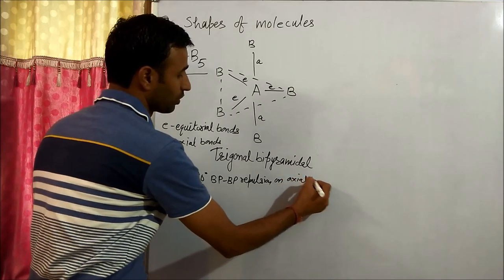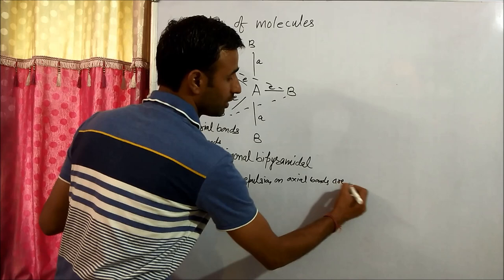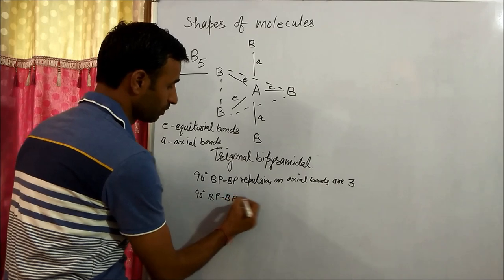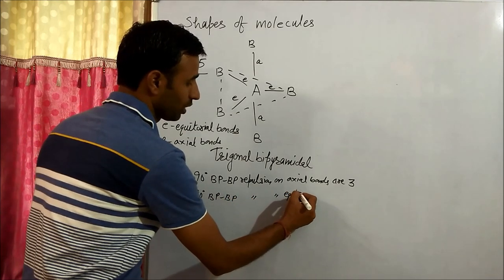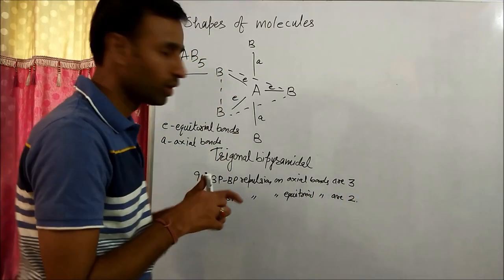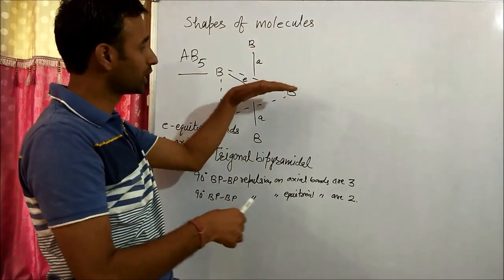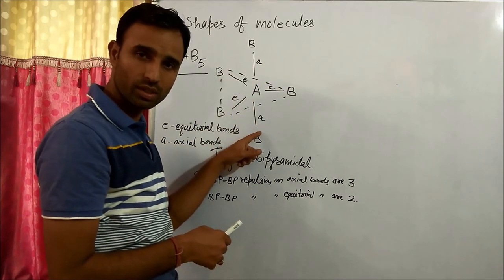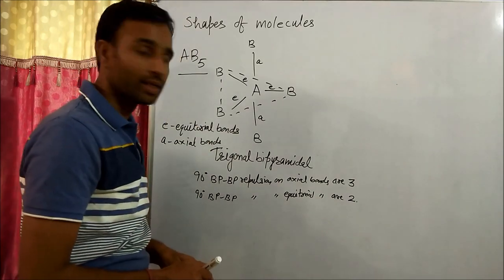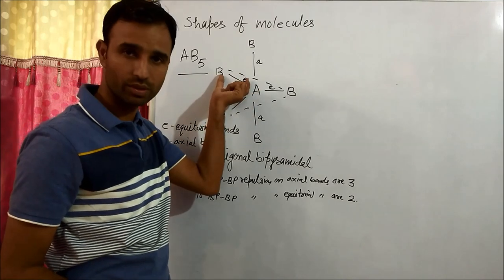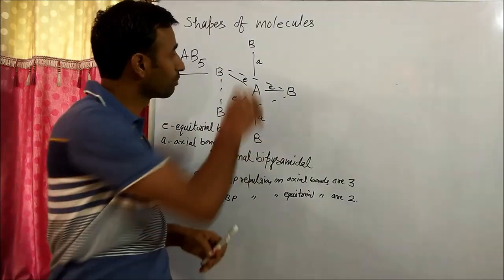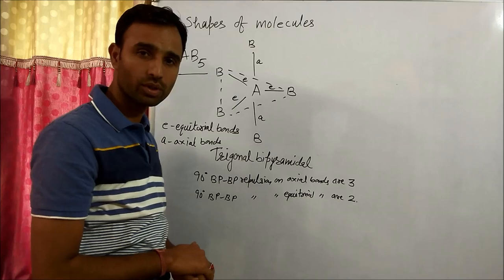The 90-degree bond pair–bond pair repulsion on axial bonds involves three interactions, but the same 90-degree repulsion on equatorial bonds involves only two, because equatorial bonds are 90 degrees with the axial bonds. That is why axial bonds are longer than equatorial bonds — repulsion on axial bonds is more than on equatorial bonds.